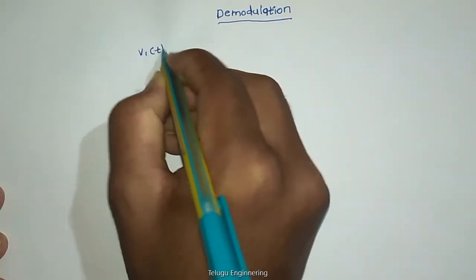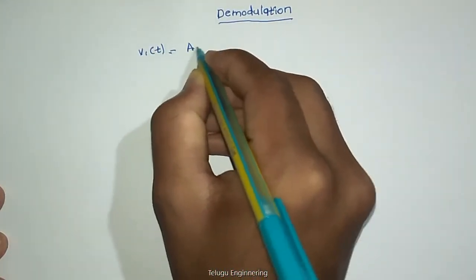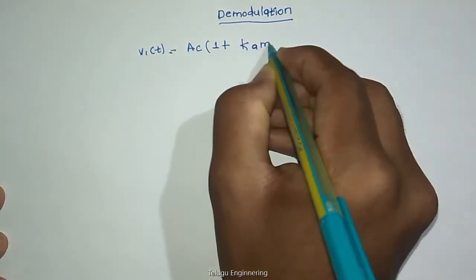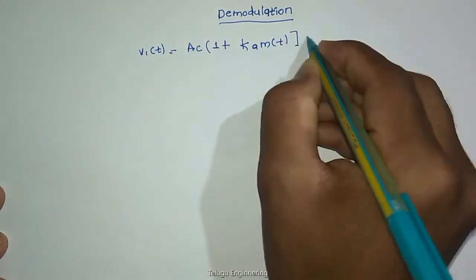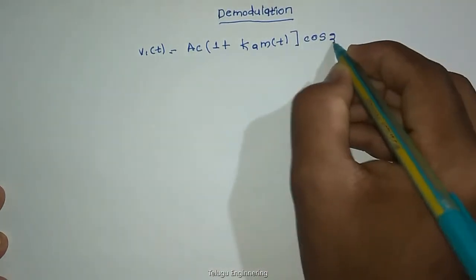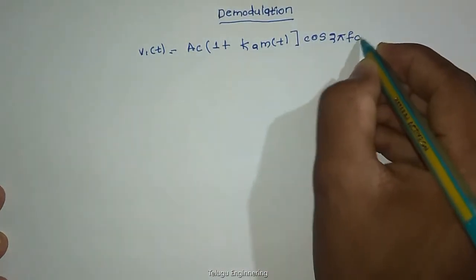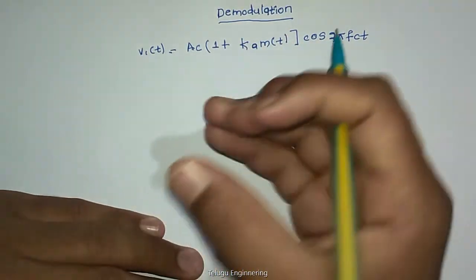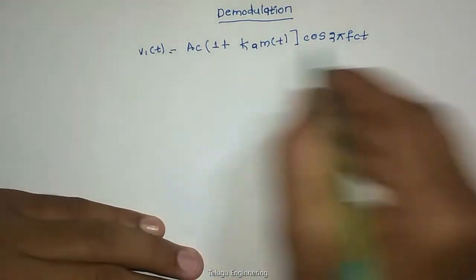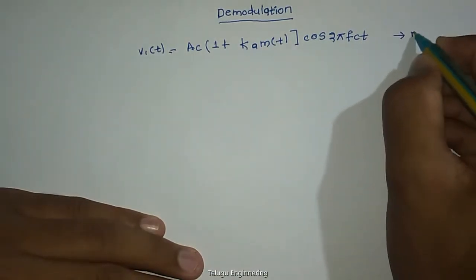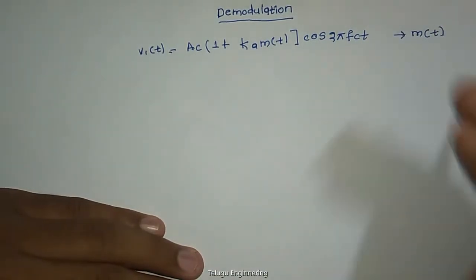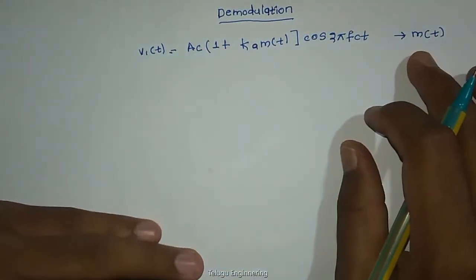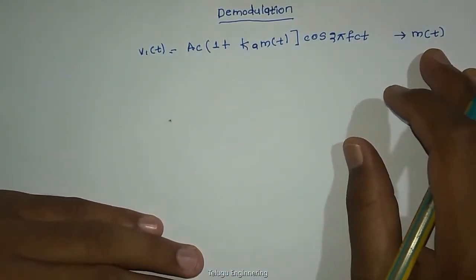That is, we are getting suppose V1 of T equal to AC into 1 plus KA M of T cosine 2 pi FCT. This is the standard wave, but we want to extract the information. This message signal is our information, so from the carrier wave, we have to extract the message signal or information signal.